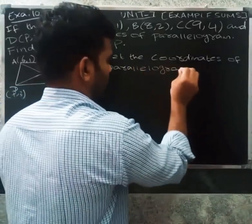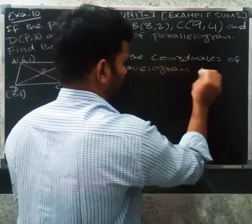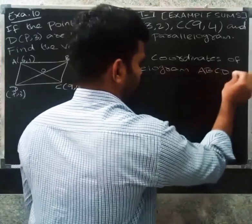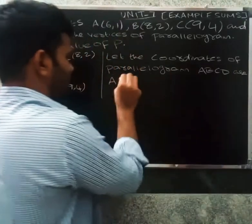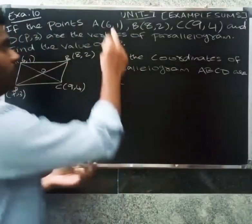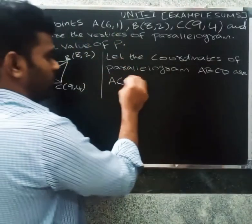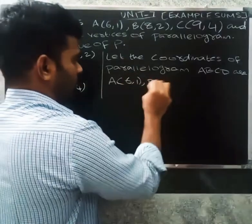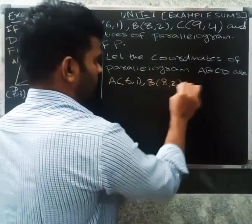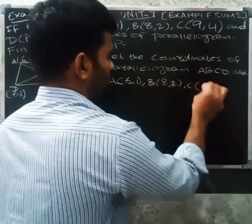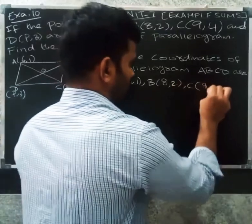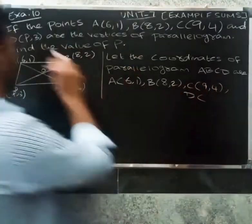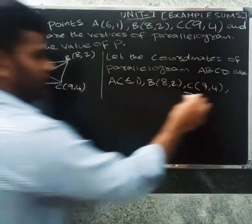Let the coordinates of the parallelogram vertices be A, B, C, D. The points are A(6,1), B(8,2), C(9,4), and D(p,3).